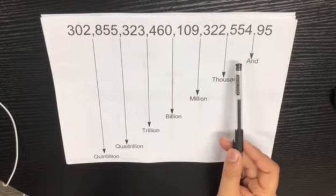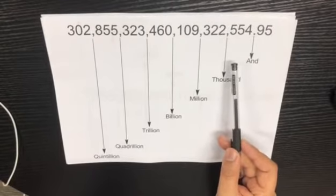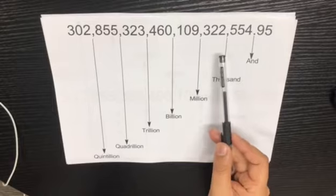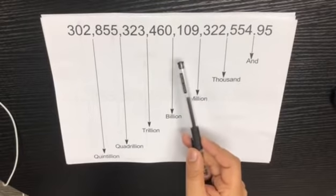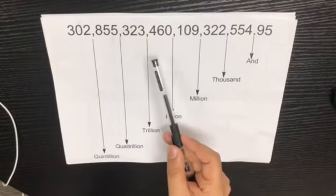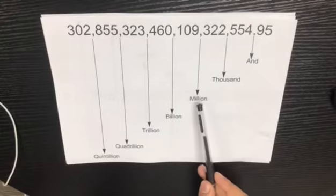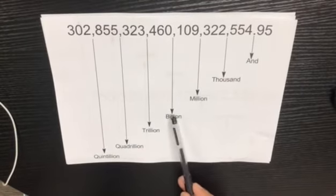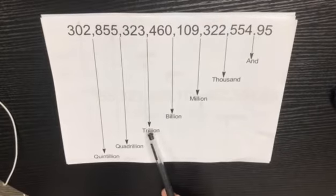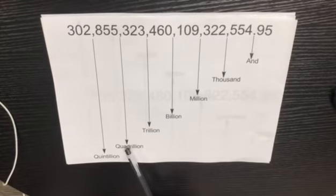After the first 3 digits, it is one thousand. Then 3 more digits: million. Then 3 more digits: billion. Then 3 more digits: trillion. And in such a way, 3 more digits: quadrillion, and then quintillion.